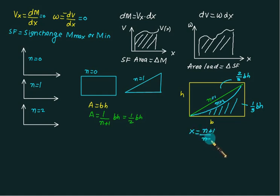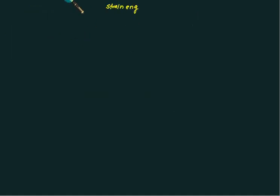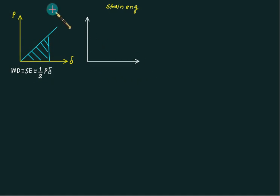The distance of the centroid can be found using the shortcut formula: (n+1)/(n+2) multiplied by b. These are shortcut formulas normally used for SFD and BMD. The location of center of gravity or center of area is measured from the apex. For impact loading, we have a load versus deflection diagram (P versus delta diagram). Assuming a linear elastic curve, the area under this diagram is called work done, equal to (1/2) × P × delta.